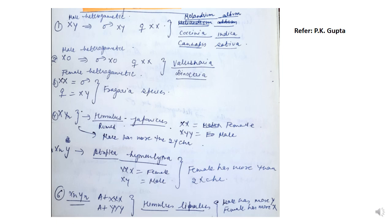A fifth classification is found in Atriplex, where if there are more than two X chromosomes the plant is female, and if there is only one X chromosome it is male. So XXX would be female and XY would be male. In the sixth type, when the male has more Y chromosomes and the female has more X chromosomes — for example, autosomes plus 3X is female and autosomes plus 3Y is male.